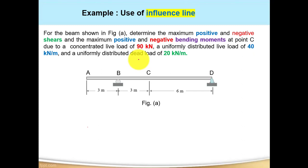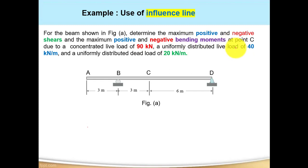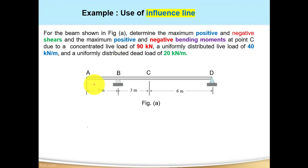Hello everyone. In this video we're going to solve one problem on influence line. This problem is very important because it can tell us the use of influence line. For the beam shown in the figure, determine the maximum positive and negative shears and maximum positive and negative bending moments at point C due to: a concentrated live load of 90 kN, a uniformly distributed live load of 40 kN/m, and a uniformly distributed dead load of 20 kN/m.